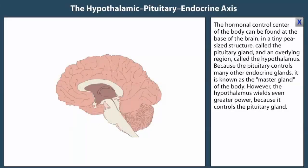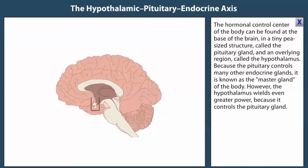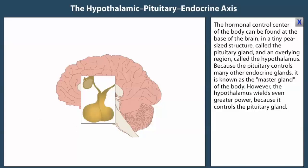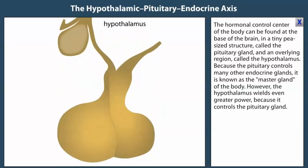The hormonal control center of the body can be found at the base of the brain in a tiny pea-sized structure called the pituitary gland and an overlying region called the hypothalamus. Because the pituitary controls many other endocrine glands, it's known as the master gland of the body. However, the hypothalamus wields even greater power because it controls the pituitary gland.